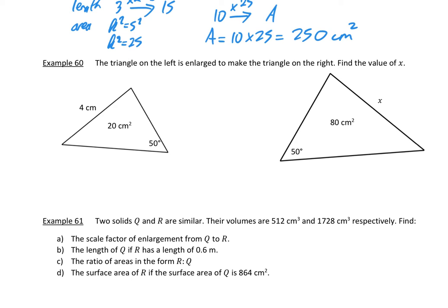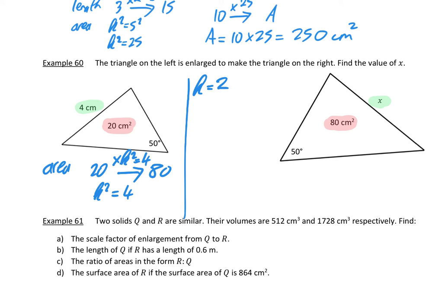The triangle on the left is enlarged to make the triangle on the right — find the value of x. These are similar triangles, and an area of 20 cm² becomes an area of 80 cm². Also, a length of 4 on the small triangle becomes x on the big triangle. For area, 20 goes to 80 by multiplying by k squared, so k squared equals 4, which means k equals 2. For length, 4 goes to x by multiplying by 2, so x equals 4 times 2, which is 8 centimetres.